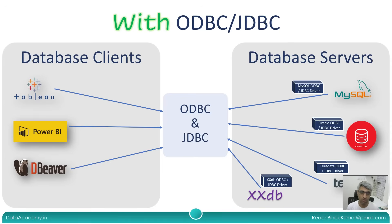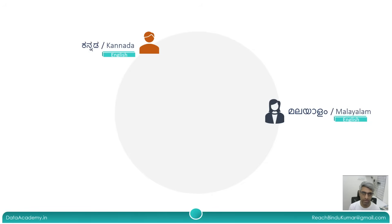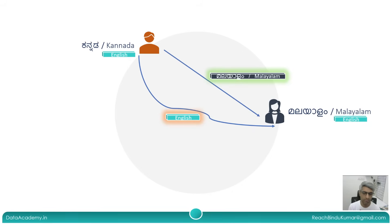ODBC and JDBC ensure a common standard and high compatibility between different database clients and different database servers. But there's one more thing to highlight. Consider two people: a Kannada-speaking person and a Malayalam-speaking person — both have English as a common language. Although they can communicate using English, there are certain scenarios where talking in their mother tongue makes more sense, such as deeply social interactions like conflict resolution between couples. In such deeply social conversations, communicating in one's own mother tongue has a lot more impact and influence.